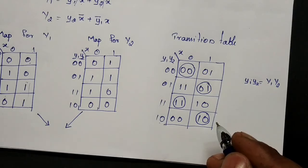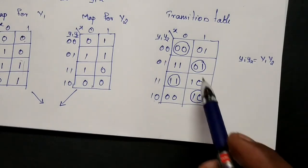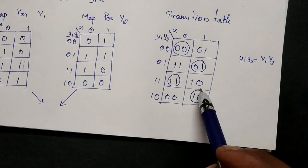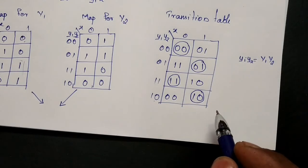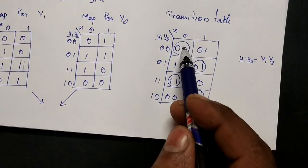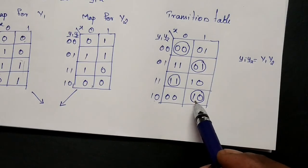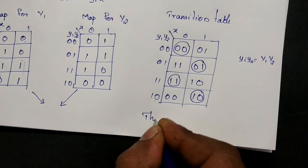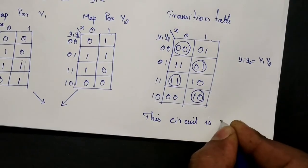Now we check whether the circuit is stable or not. For this we check column-wise in the transition table: if all columns are filled with at least one stable state, then the system is considered stable. In this column we have 2 stable states, and in this column also we have 2 stable states — we need at least 1. Therefore, this circuit is stable.